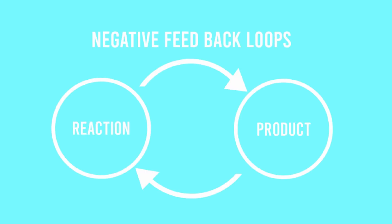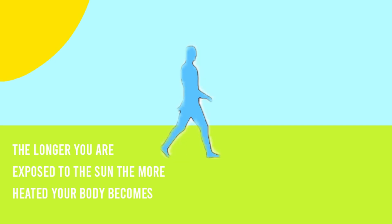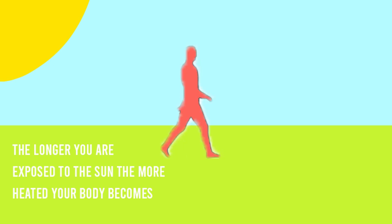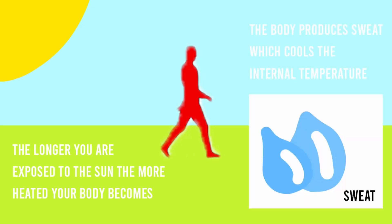Negative feedback loops occur when the product of a reaction leads to a decrease of that reaction. To understand this concept, let's look back at our example of walking outside in the summer again. The more you walk outside in the exposure of the sun, the more heated your body will become. However, your body knows that if it becomes too hot, then its function will decrease significantly. As a result, your body produces sweat, which cools the internal temperature of the body down to its optimal temperature.